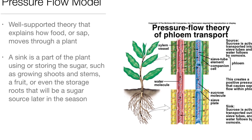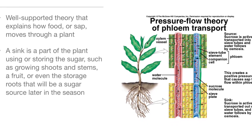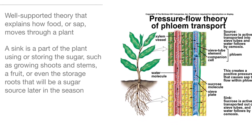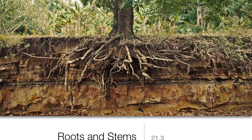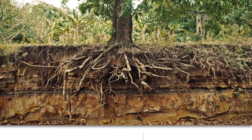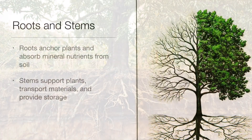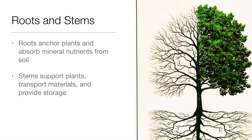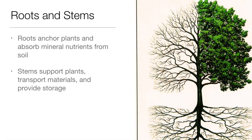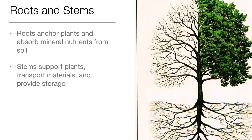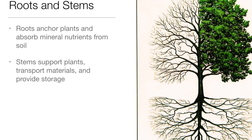A sink is a part of a plant that is using or storing sugar, such as growing roots and stems, a fruit, or storage roots that will be a sugar source later in the season. Lesson 21.3: Roots and Stems. Roots anchor plants and absorb mineral nutrients from the soil. Stems support plants, transport materials, and provide storage.